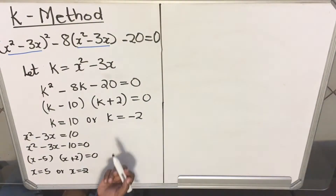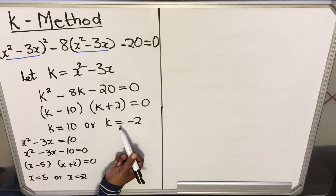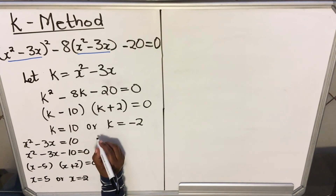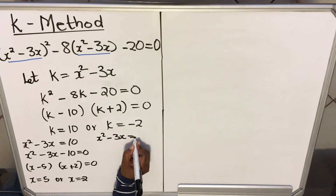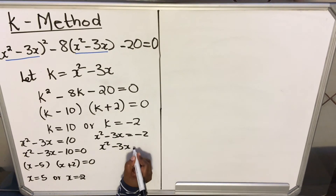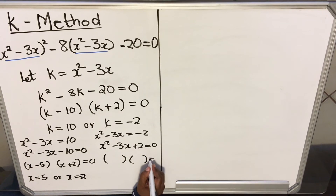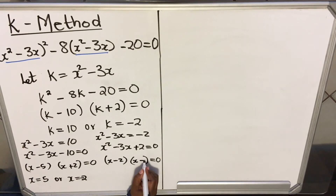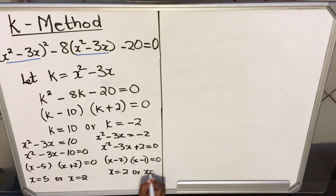Now let's do the other side. k equals minus 2. Remember that k is x squared minus 3x, so instead of writing k, we have x squared minus 3x equals minus 2. That gives x squared minus 3x plus 2 equals 0. Factorizing — or use the quadratic formula if needed — gives x equals 2 or x equals 1.